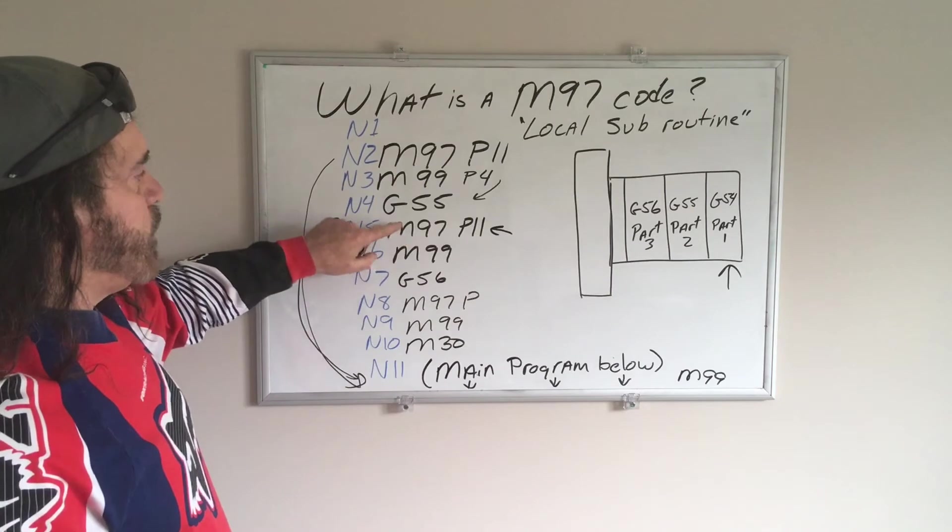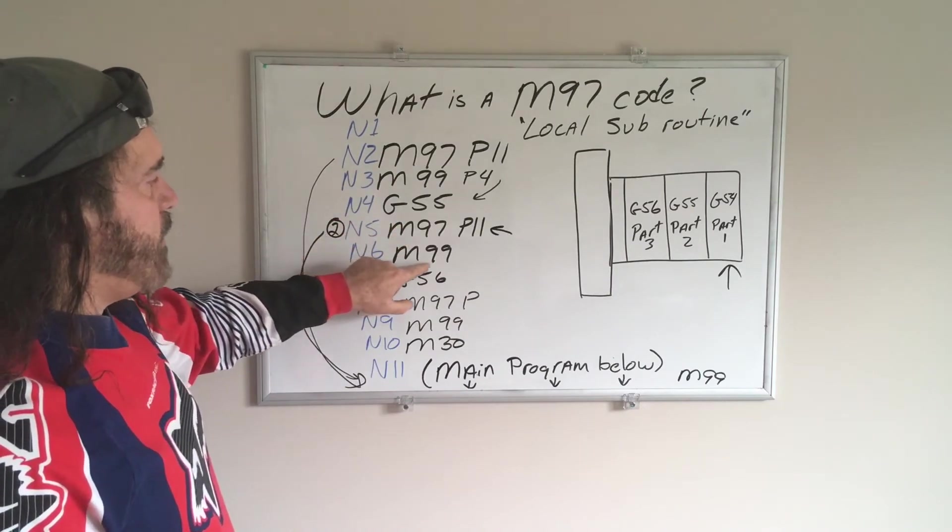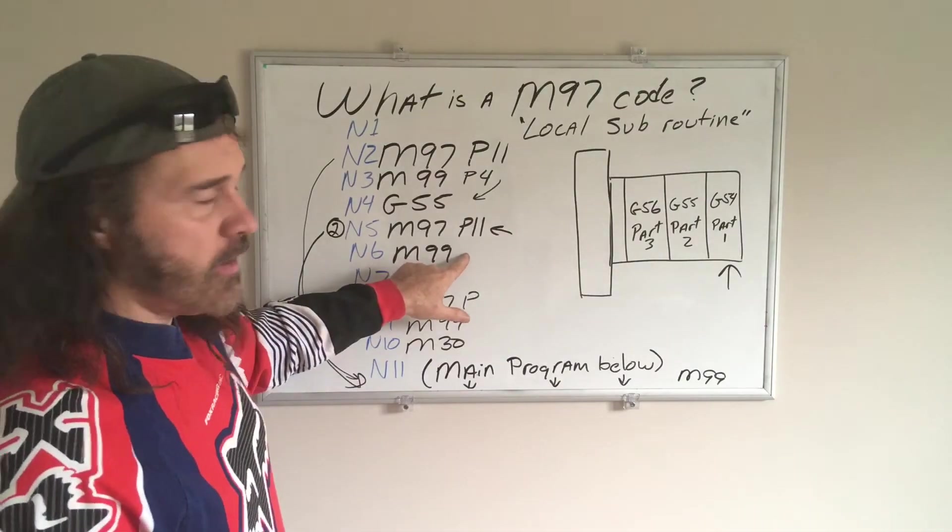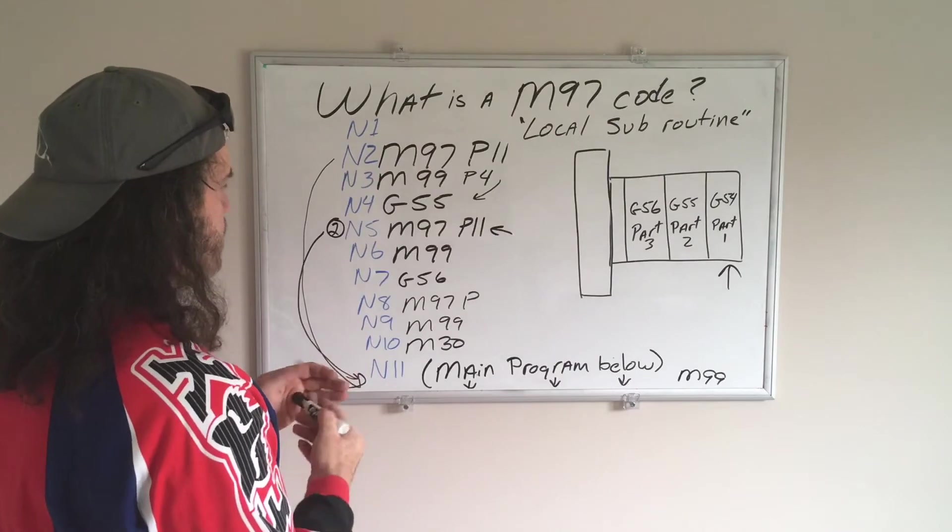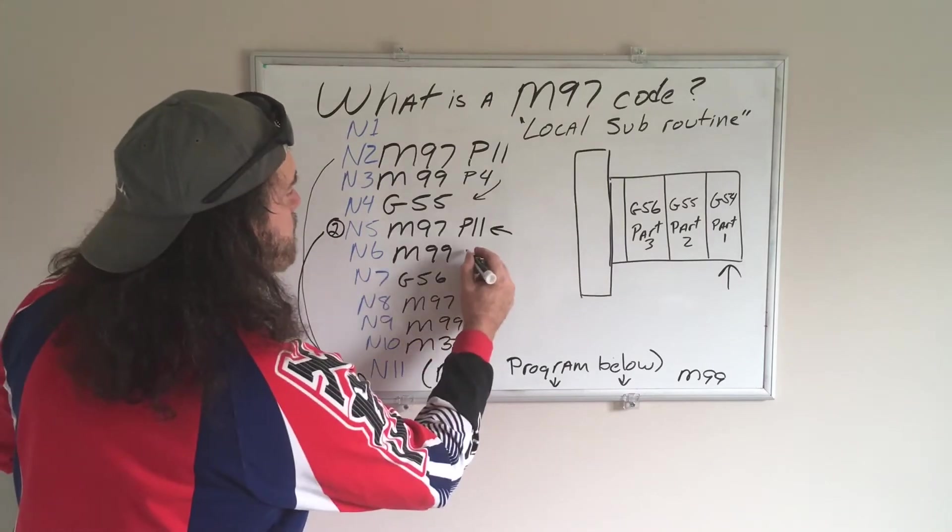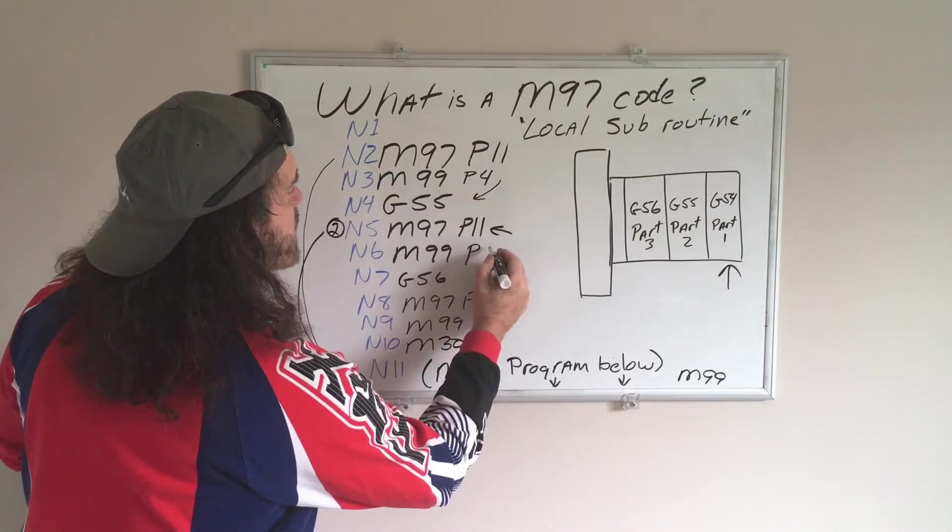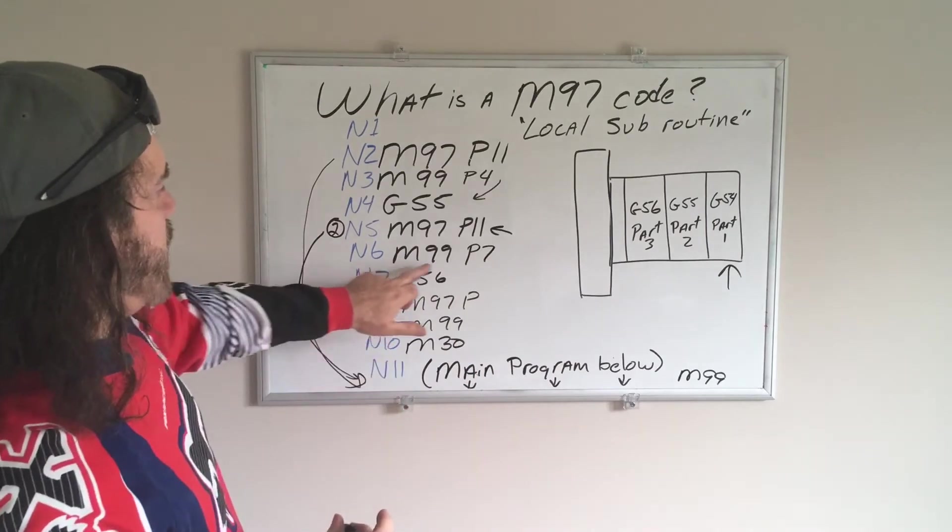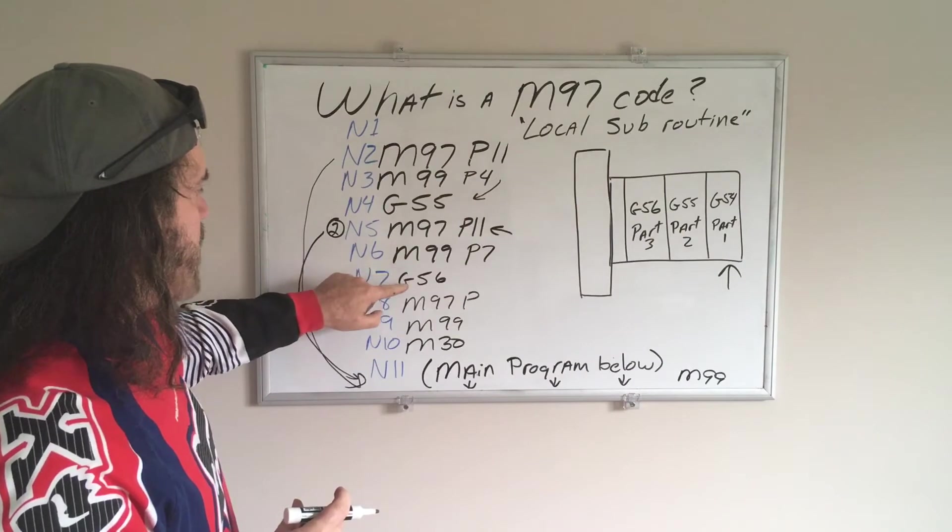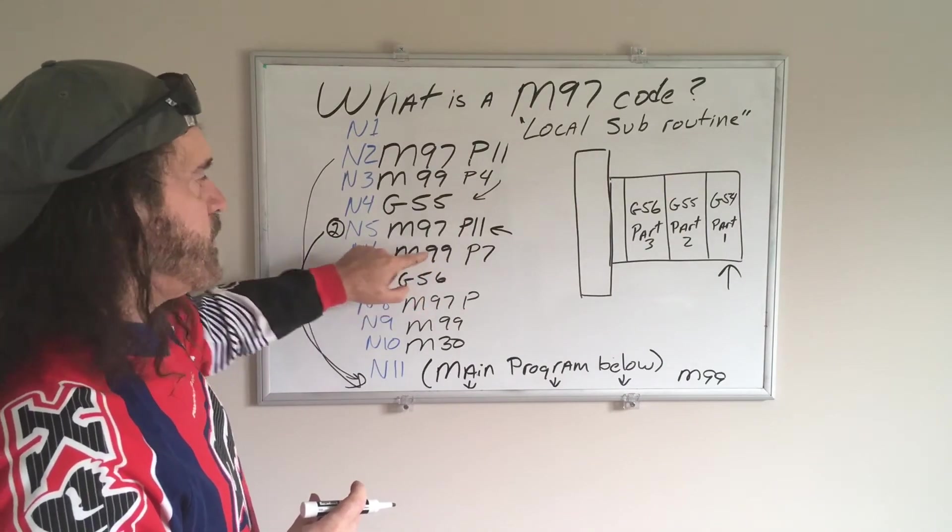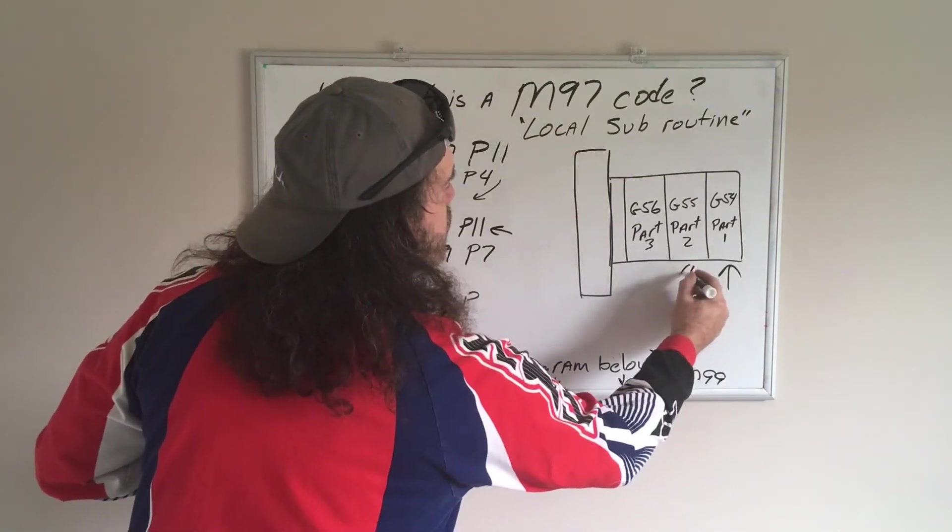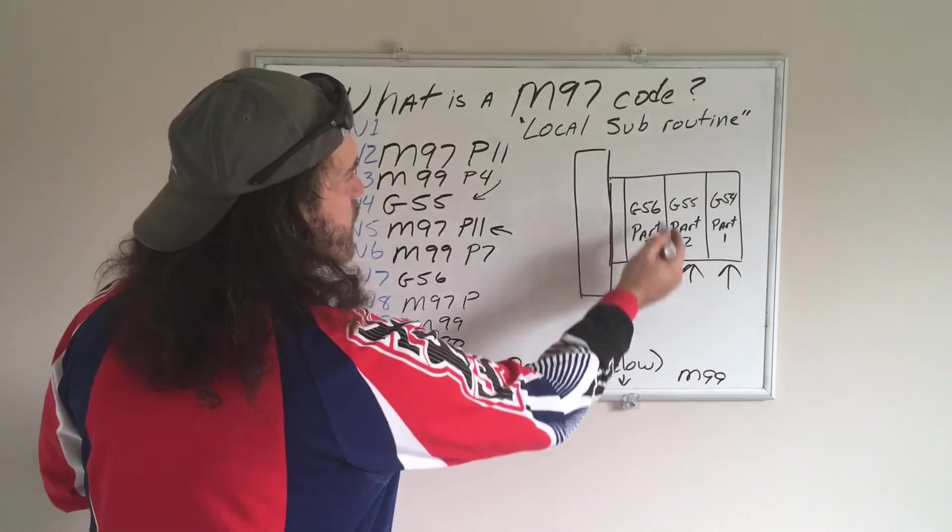And now, it's going to want to continue on. So there's my next M99. I have to give it a value to move to the next line. So my next line is line number 7, because that's my next part. So we're going to give it a P7. So it's M99 P7, which tells it to jump down to my next line. Because if you don't give it a P value, it's just going to rewind. We don't want to do that. So now we're at G56. Part number 2 is all done. So now we're going to start part number 3.